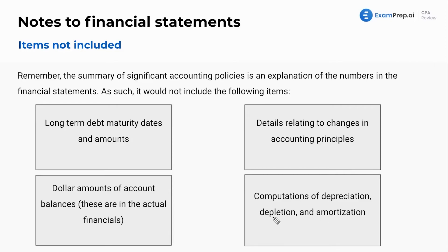For those not familiar, depletion is the same thing as depreciation and amortization — it is just for natural resources. If you have a gold mine or an oil well, maybe you deplete it over a 20-year period, the same process as depreciation. Amortization is the same process applied to intangible assets. For example, if you have a contract with someone that's worth money, it's an intangible asset, and you might amortize it over 20 years, just like you would depreciate a fixed asset over a certain amount of time.